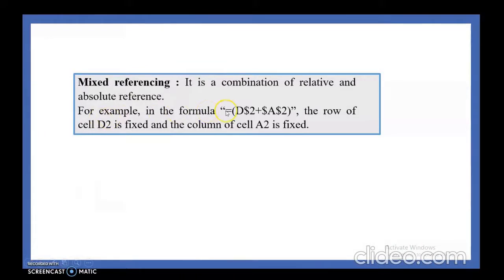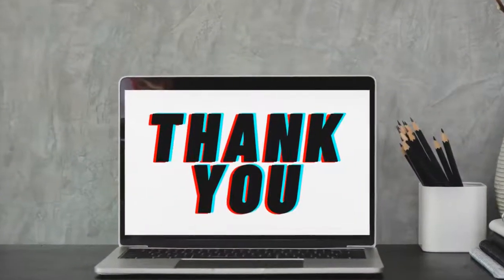Next is mixed cell referencing. Mixed cell referencing means it is a combination of relative and absolute referencing. If you combine both in a formula, that is called mixed cell referencing. For example, the row of D2 is fixed and the column of A2 is fixed. Here D is a changing column, but the row will always remain 2. Thank you.